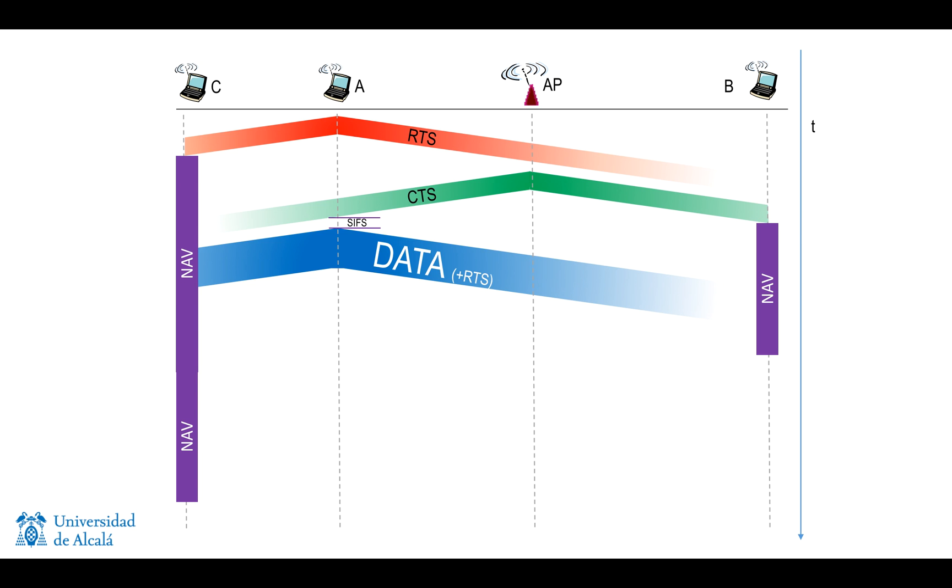When the access point receives the data plus RTS, it's going to send after a short time an ACK, an acknowledgement, with an implicit clear to send. Basically, extending the lease of the channel for anyone that is listening. This implicit CTS in the ACK will provoke that B extends the time of the NAV inhibition.